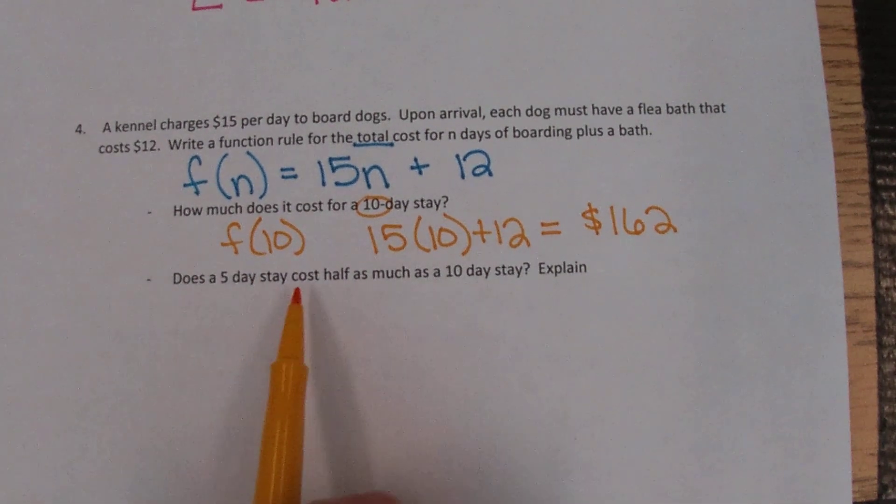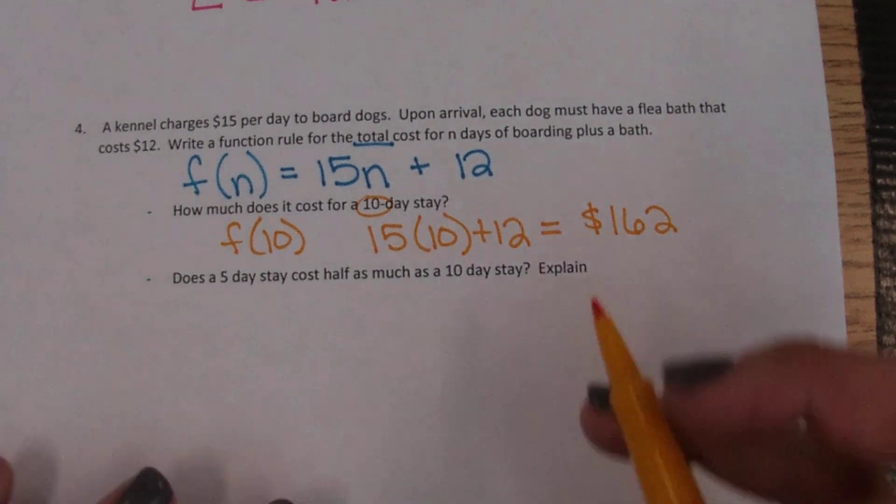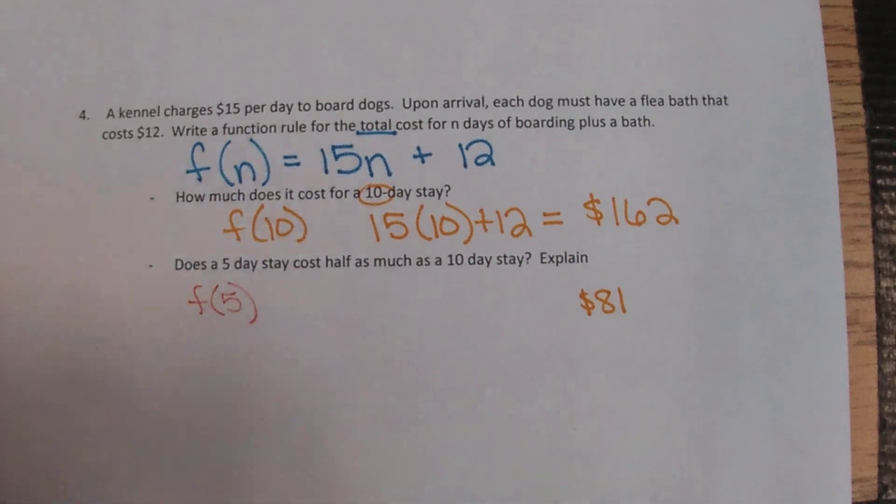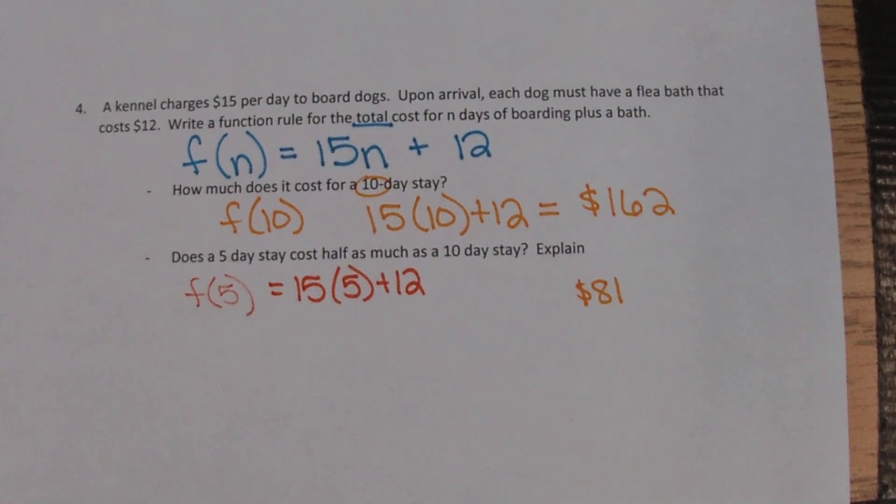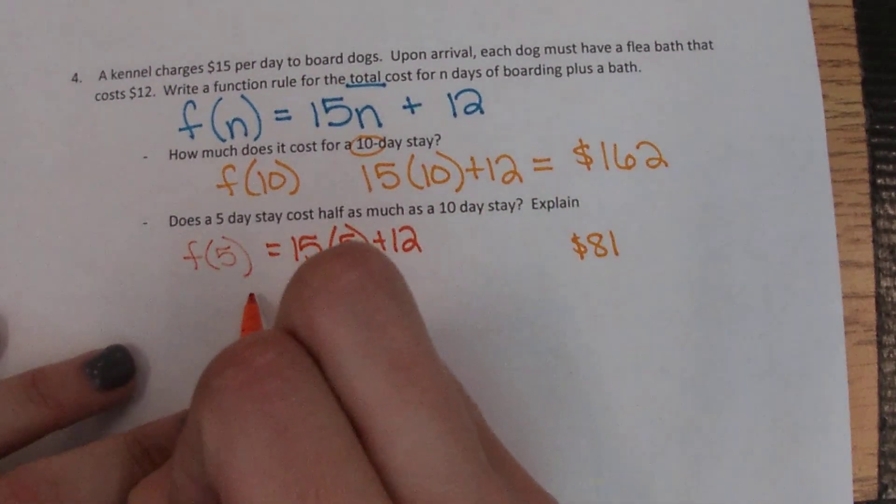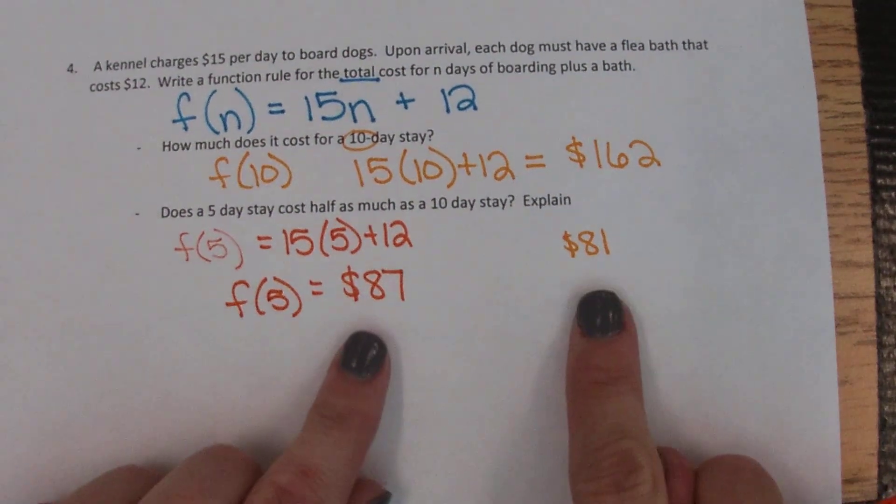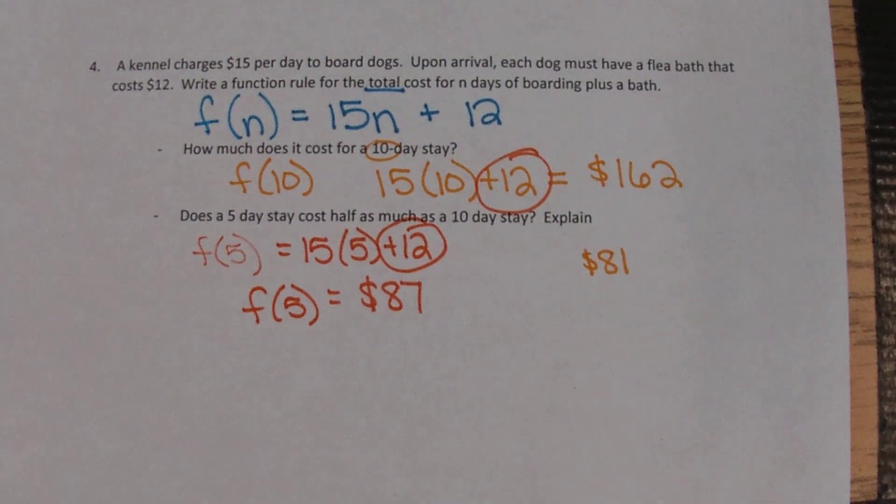Does a five day stay cost half as much as a 10 day stay? Well we just calculated that a 10 day stay was 162 dollars, so half of that would be 81. So if we calculate a five day stay, that'd be f of 5, so we'll do 15 times 5 plus 12 which gives us 87. So in this situation no, it's not, and the reason being is because that 12 dollars isn't happening per day.